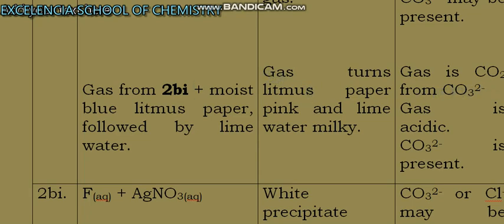That shows that gas is—please don't say CO₂ is present, no, CO₂ is not present in the original sample. Gas is CO₂ from CO3²⁻. Also note that gas is acidic because of the effect on litmus. Gas is acidic, and then you conclude that CO3²⁻ is present.